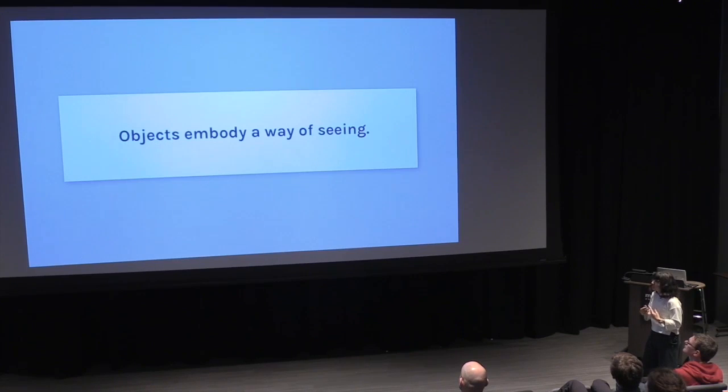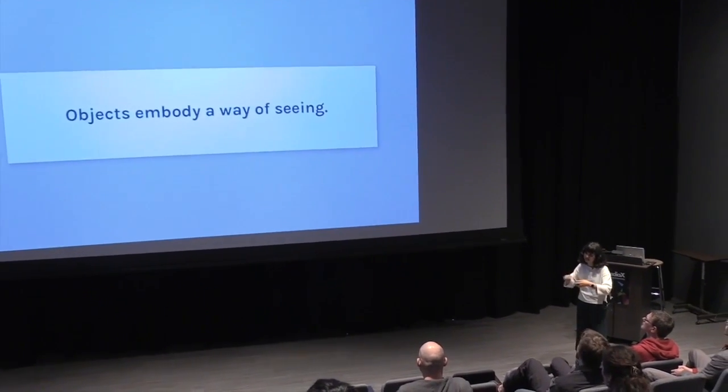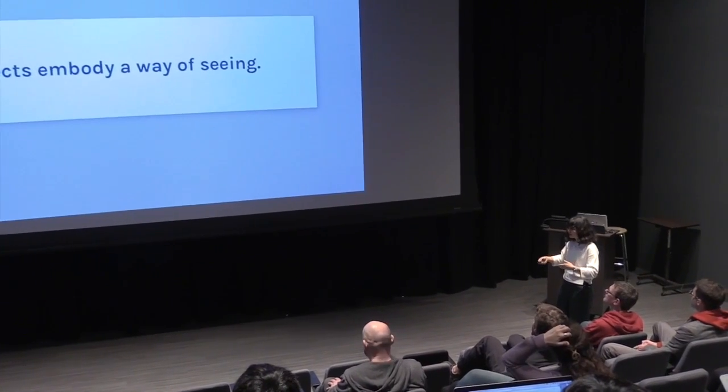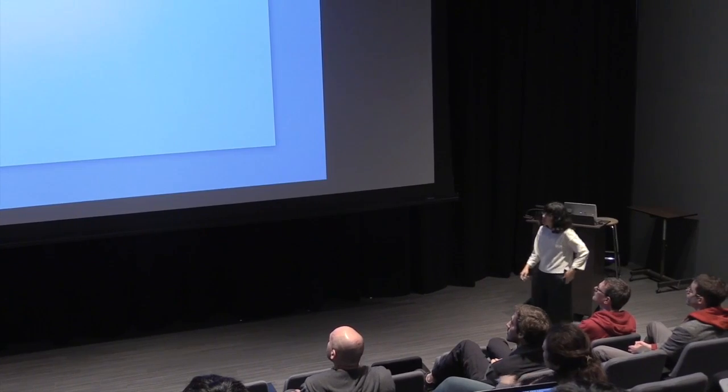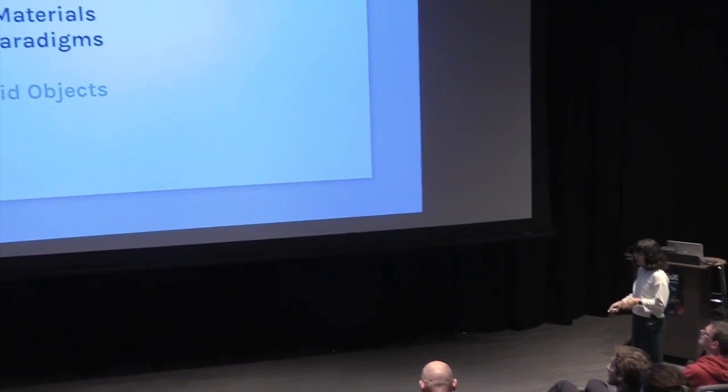So I like to think that objects embody a way of seeing, meaning that whatever that we design for it and how we embed these kinds of thinking, like this one that I mentioned, makes us perceive it differently. And I want to talk about a few different things. So I want to talk about new materials, old paradigms, and hybrid objects. Let's start with new materials.